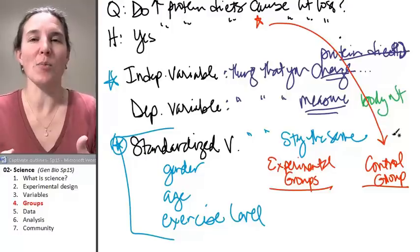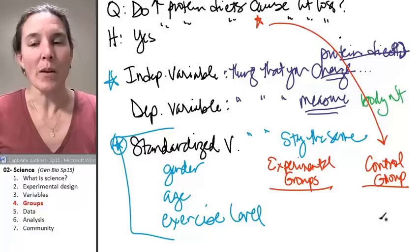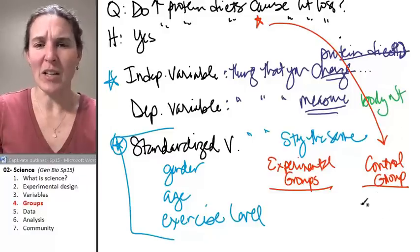That's your control group. The experimental group gets different amounts of light.